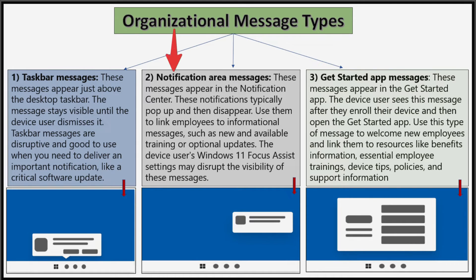Notification area messages appear in the notification center — they typically pop up and then disappear. You can use them to link employees to informational messages such as new available training or optional updates. Note that the device user's Windows 11 Focus Assist setting may disrupt the visibility of these messages. Get started app messages appear in the Get Started app after the device user enrolls and opens the app. You can use these to welcome new employees and link them to resources like benefits information, essential employee trainings, device tips, policies, and support information.